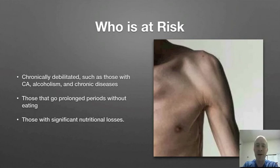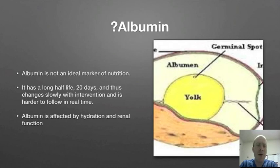So what about albumin — why not use albumin? Well, albumin is not an ideal marker for nutrition for a few reasons. It has a really long half-life of 20 days, and thus changes slowly with interventions, making it harder to follow in real time. Albumin is also affected by hydration and renal function.